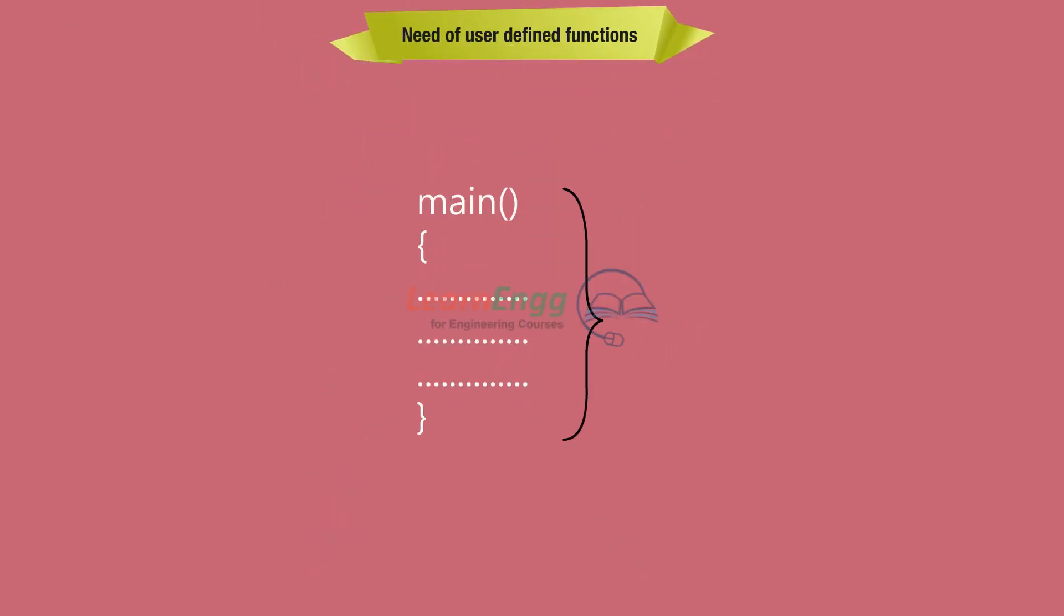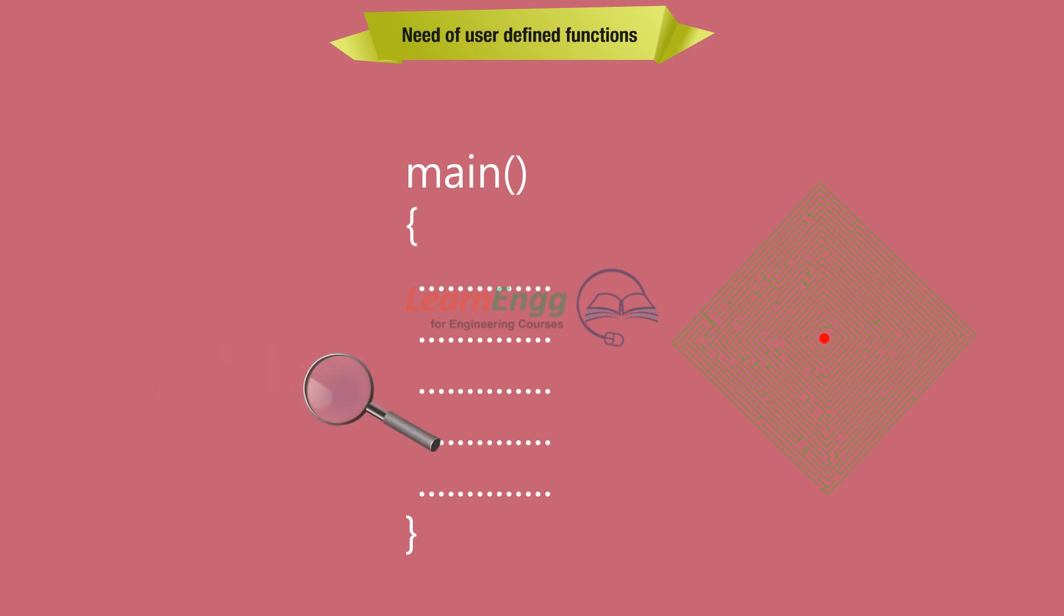Moving on to the need for writing a user-defined function. As we know that main is a user-defined function and every C program should have exactly one main function which indicates where the execution of a program begins. We can write a program with only one main function but the program will become too large and complex, also debugging would be a difficult job.